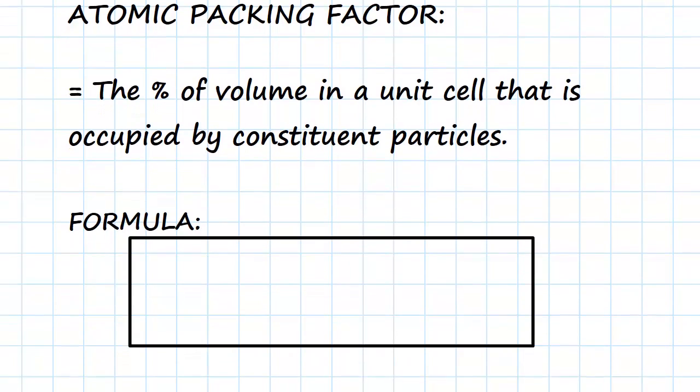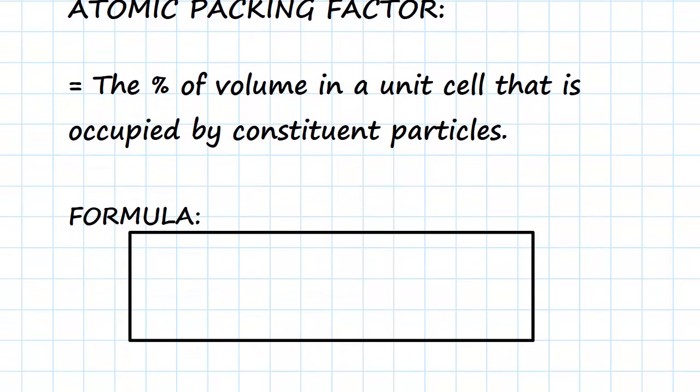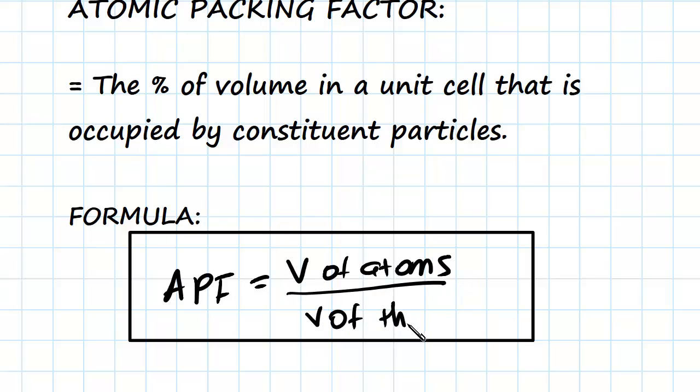Okay, so the general formula for atomic packing factor is going to be APF equals the volume of atoms in that cell divided by the overall volume of the cell, the unit cell that is, which makes sense. So we're just trying to look at the percentage of the atoms over the percentage of the total thing.